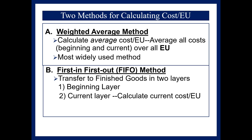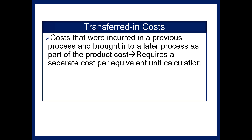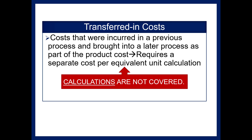There are two methods for calculating cost per equivalent unit: the weighted average method, which averages all costs incurred over all work done, and the FIFO method, which keeps two separate layers — a beginning layer and a current layer. While it's useful to know that the FIFO method exists, it is not covered in this course, so you are responsible for the weighted average method. You also need to know what transferred-in costs are: costs incurred in a previous process and brought into a later process, such as from the cutting department to the canning department. We will not cover those calculations in this course, but you do need to know what they are.